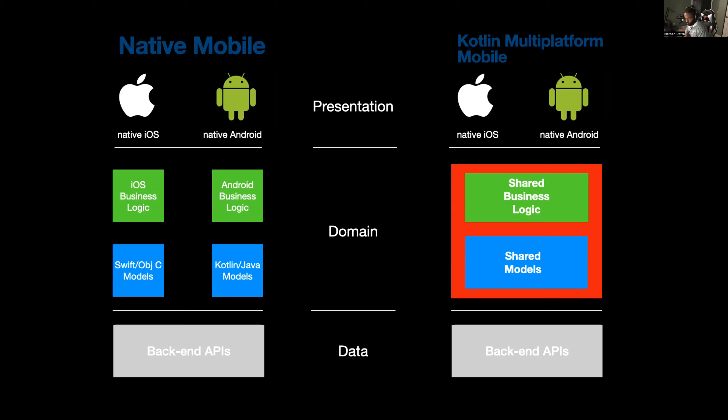In the domain layer where Kotlin Multiplatform Mobile lives, on the left side you'll see a traditional native mobile app architecture where iOS and Android business logic are separate, pointing independently to Swift and Kotlin models as well as back-end APIs that are often shared. You often see complete apps written in Swift or in Kotlin for iOS and Android. But with Kotlin Multiplatform, the idea is to share that business logic in your domain layer — shared models and shared business logic — while back-end APIs remain as they normally would be.